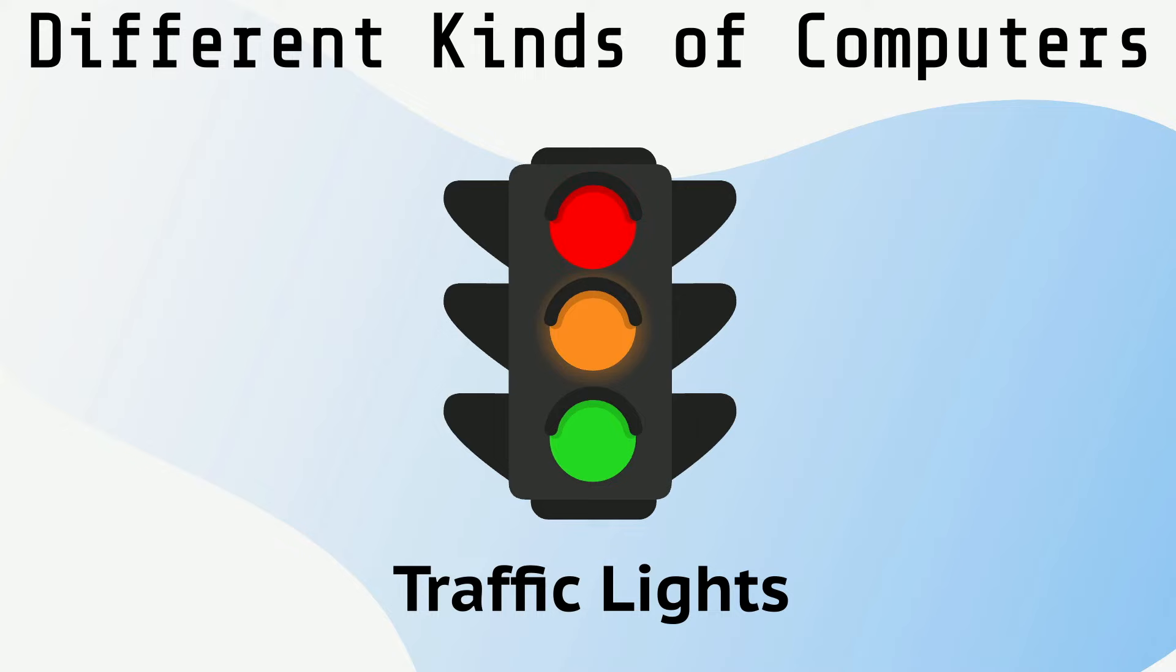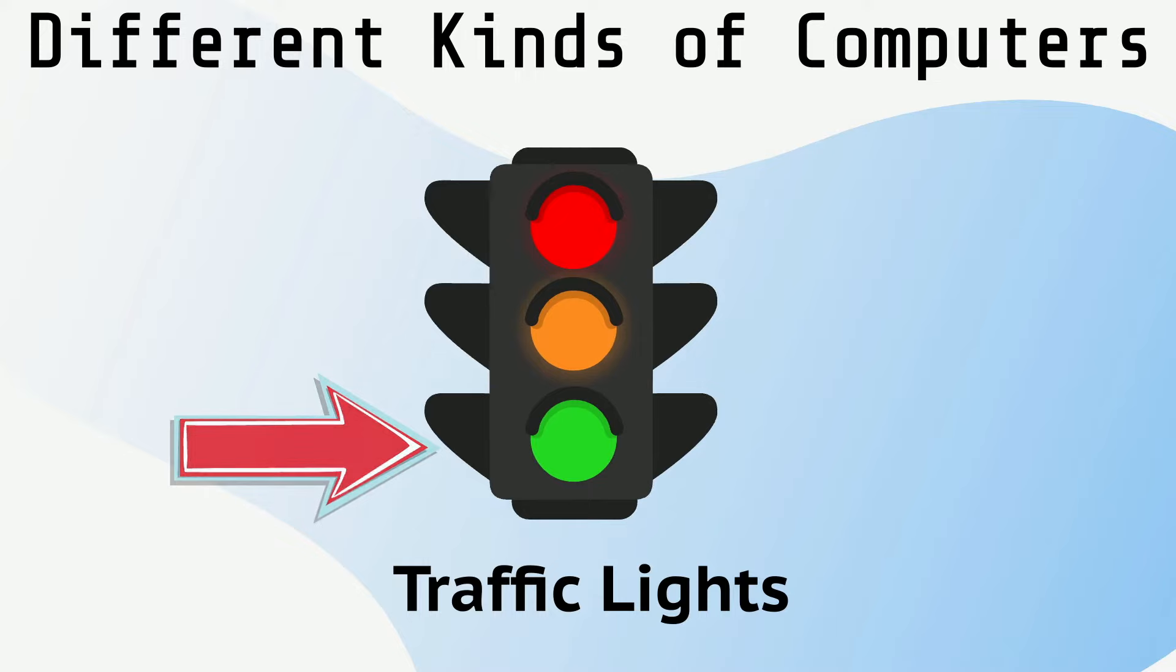A computer program tells the traffic lights when to change from red to green. Some traffic lights have a button that you can push to tell the computer that you want to cross the street.